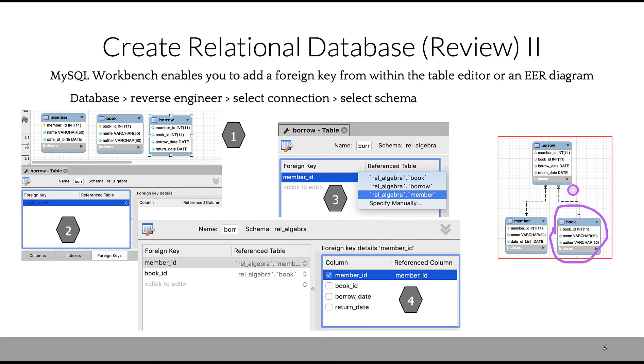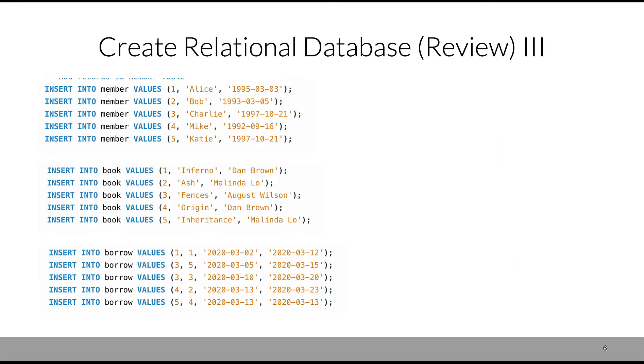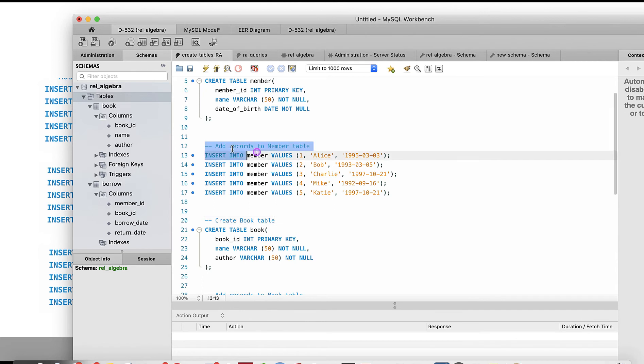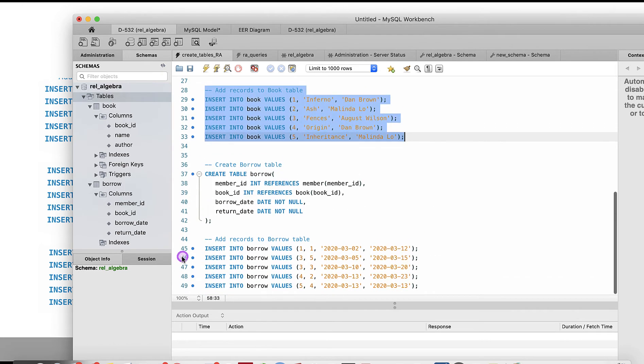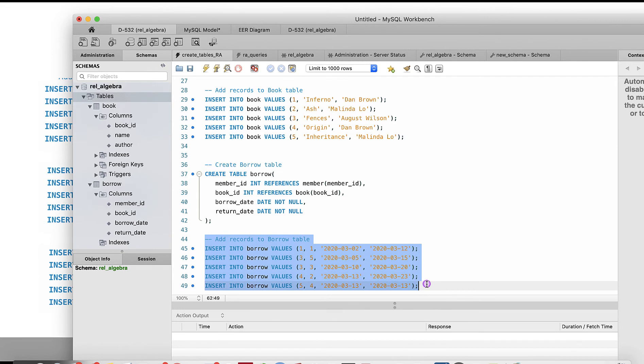Now we can actually populate our tables. Just follow the provided script. We're inserting records into table 'member,' inserting records into table 'book,' and inserting records into table 'borrow.' You can use one of the execution symbols on the top left.